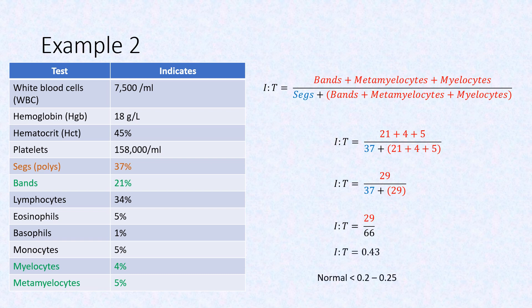Recall that a normal IT ratio is less than 0.2 to 0.25, so this indicates an infection.